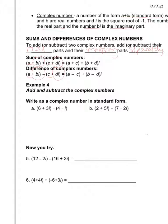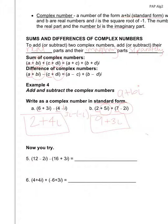Write the complex number in standard form — real part first, then imaginary part. For example A, we're subtracting: real parts 6 minus 4 equals 2, and imaginary parts 3i minus negative i — subtracting a negative makes it plus — giving us positive 4i. So the answer is 2 plus 4i. For example B, adding: 2 plus 7 equals 9, and 5i plus negative 2i equals 3i, giving us 9 plus 3i.